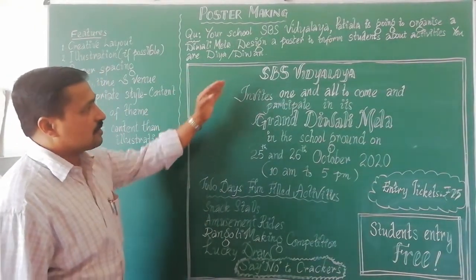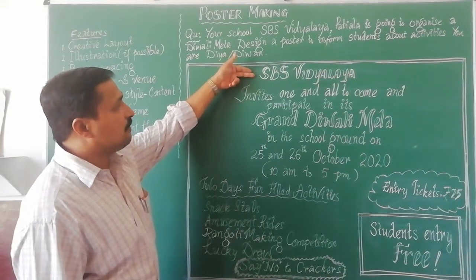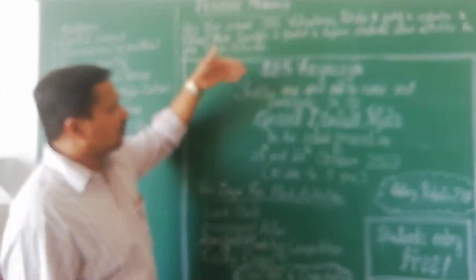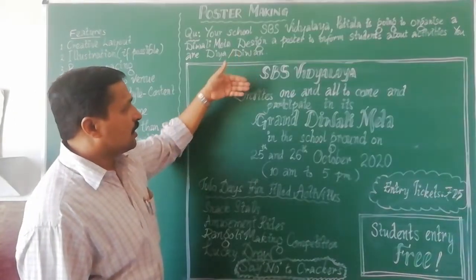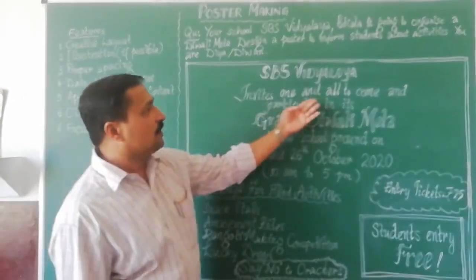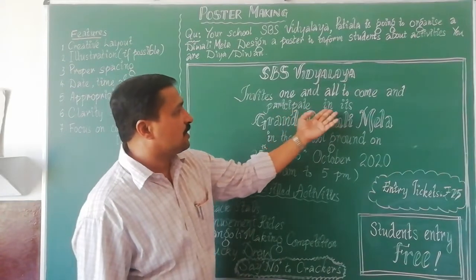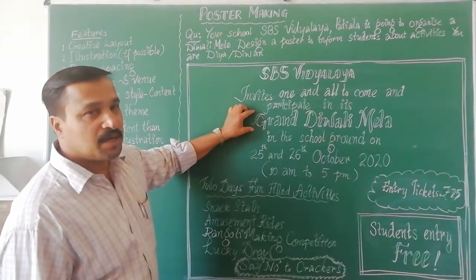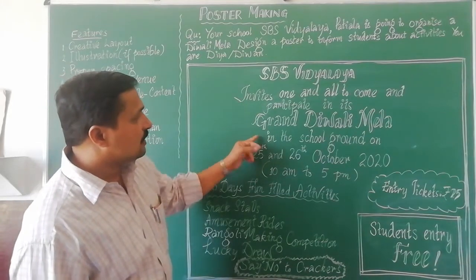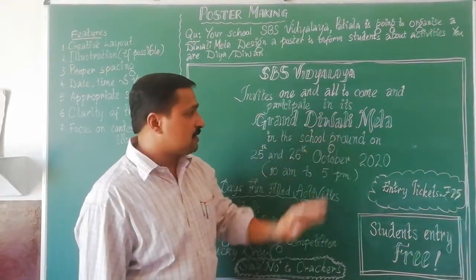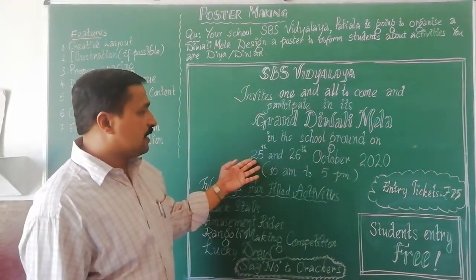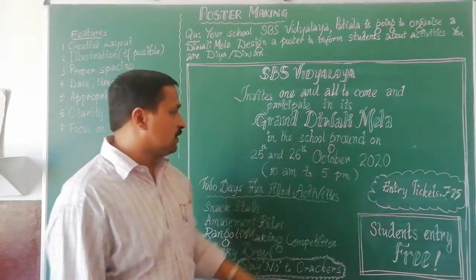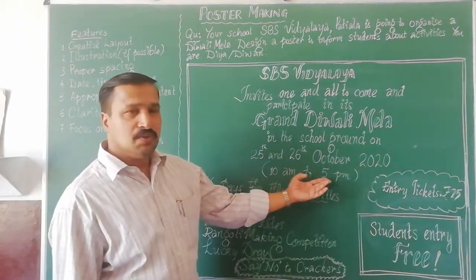First of all, the header is given — where this particular Mela is to be held. After that you can see: 'Invites one and all to come and participate in its Grand Diwali Mela.' This is the highlighted portion. Then the place is described: 'In the school ground.' The dates given are 25th and 26th October 2020, and the time is 10am to 5pm.